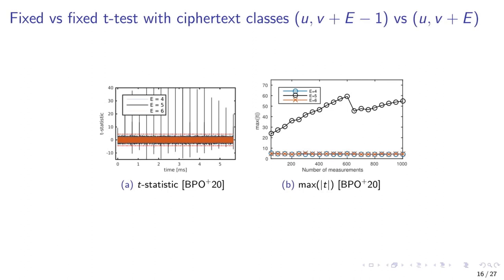Our attack on the higher-order method proceeds very similarly. Here, instead of comparing and unmasking both ciphertext components, the comparison proceeds in a number of sets — exactly 16 sets in this figure. Again, for e equals 5, we can clearly distinguish t-test leakage. For the error e-1, only one of the sets will fail the comparison, whereas for the error e, all sets will fail. We can clearly distinguish 16 leakage peaks corresponding to the unmasking of each of the 16 sets.